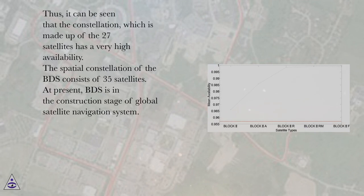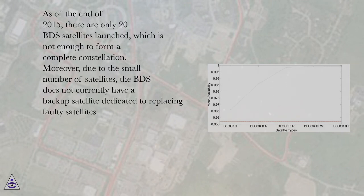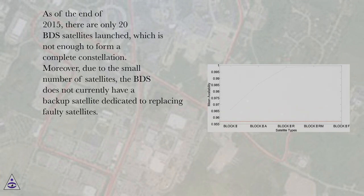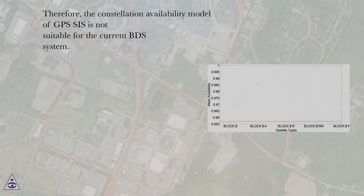The spatial constellation of the BDS consists of 35 satellites. At present, BDS is in the construction stage of a global satellite navigation system. As of the end of 2015, there are only 20 BDS satellites launched, which is not enough to form a complete constellation. Moreover, due to the small number of satellites, the BDS does not currently have a backup satellite dedicated to replacing faulty satellites. Therefore, the constellation availability model of GPS CIS is not suitable for the current BDS system.